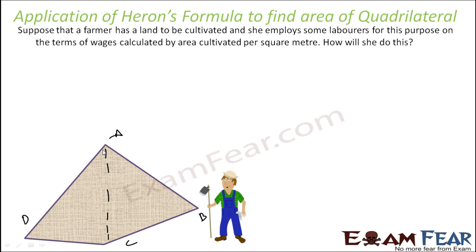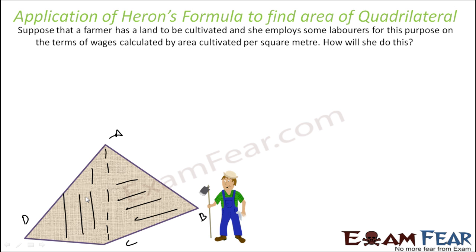Since he knows the lengths of AD, DC, and AC, he can actually find the area of triangle ADC. He also knows the lengths of AC, BC, and AB. With this, he can actually find the area of his total plot using Heron's formula.